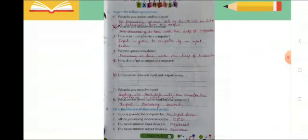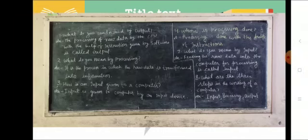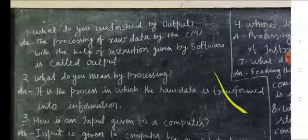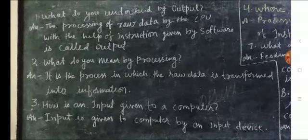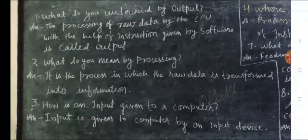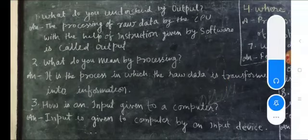If you can't see in this page, I have written on board for you all. Question and answer: first one, what do you understand by output? The processing of raw data by the CPU with the help of instructions given by software is called output.